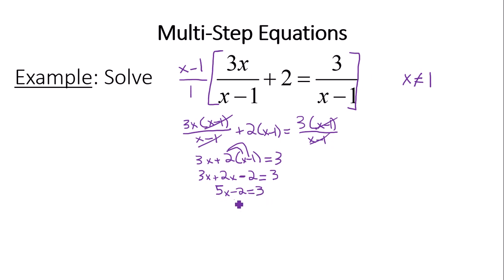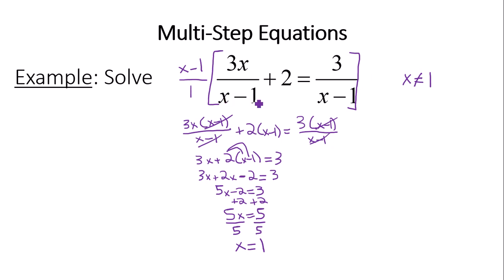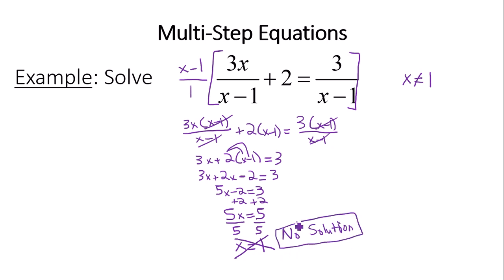Adding 2 to both sides: 5x equals 5. Dividing both sides by 5, we get x equals 1. But don't box that answer in — because x equals 1 makes the denominator zero (1 minus 1 is 0), and we already said x cannot equal 1. So this is a bogus solution. There is actually no solution for this equation.